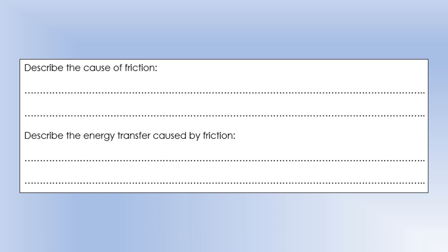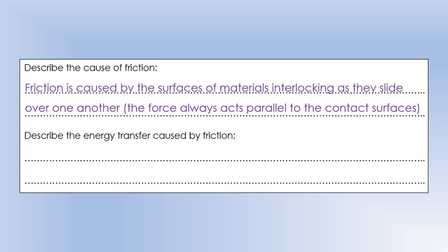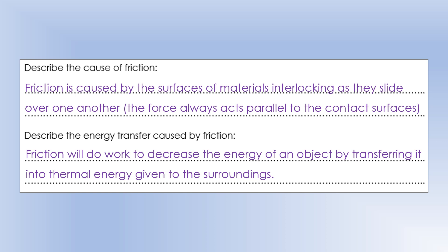Describe the cause of friction. Friction is caused by surfaces of materials interlocking as they slide past one another, and that force will act parallel to the contact surfaces. The energy transfer caused by friction is it will do work on the object to decrease its energy, and it does that by transferring thermal energy to the surroundings. The surroundings get hot, essentially.